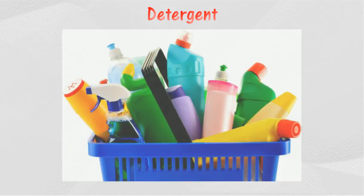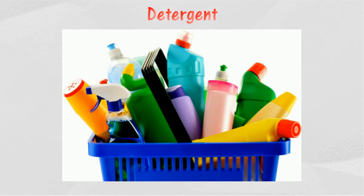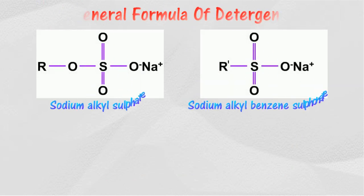A detergent is a salt that is produced from the reaction between an alkali and a sulfonic acid. The general formula of sodium alkyl sulfate and sodium alkyl benzene sulfonate detergents can be represented by the following formula.